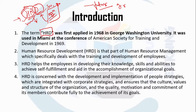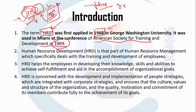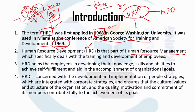The term human resource development was first applied in 1968 at George Washington University, and it was used in Miami at the conference of the American Society for Training and Development in 1969. This type of question is very important because it is usually asked in exams — when and where human resource development was first used. Human resource development is a part of human resource management. Please remember: human resource management is the broader concept which consists of human resource development. HRD specifically deals with training and development of employees.